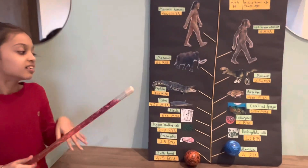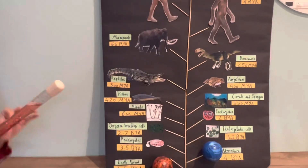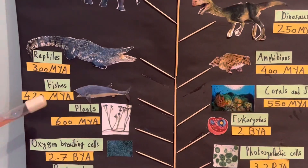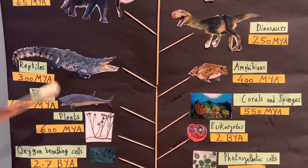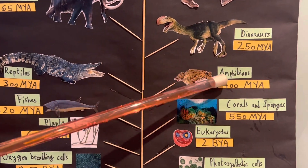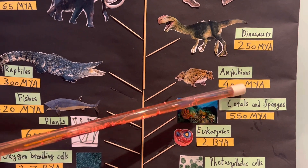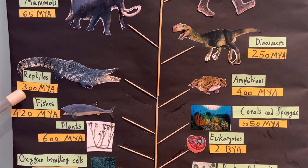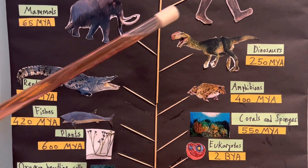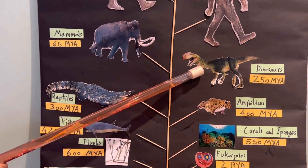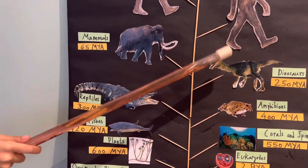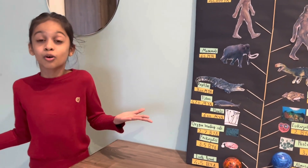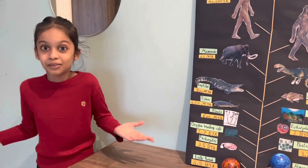Then fishes came a little bit later, 420 million years ago. Then came amphibians, 400 million years ago. Reptiles, 300 million years ago. And you must all know this one — dinosaurs, 250 million years ago. Can you believe that?